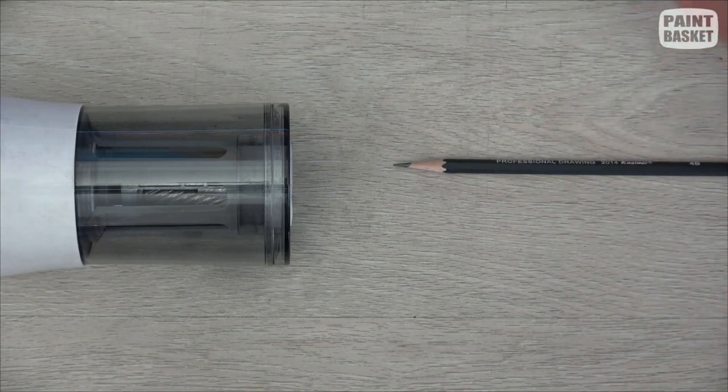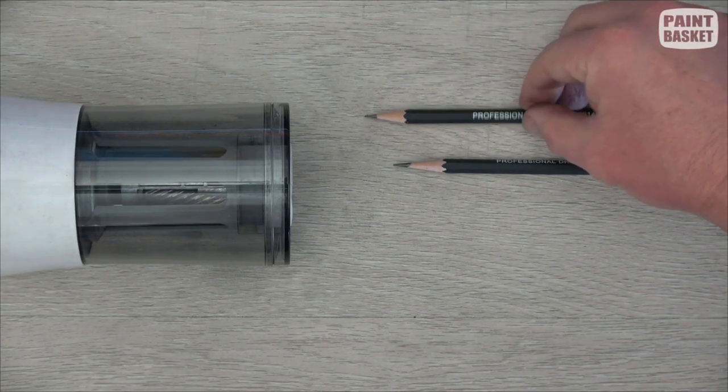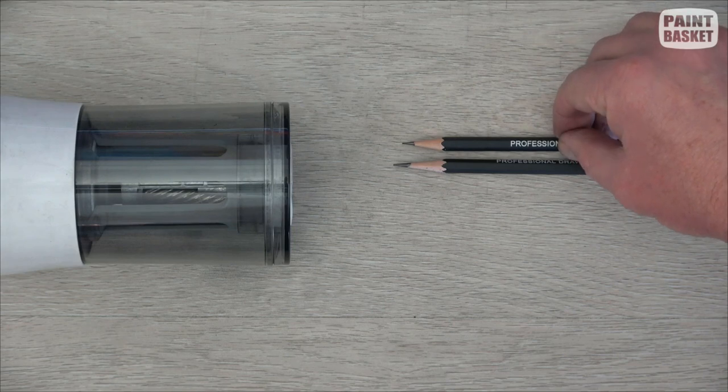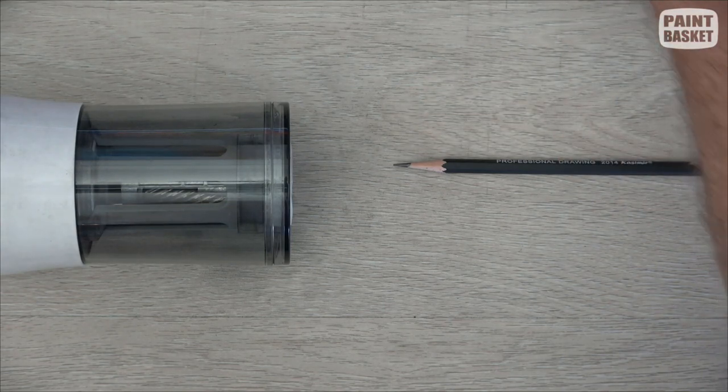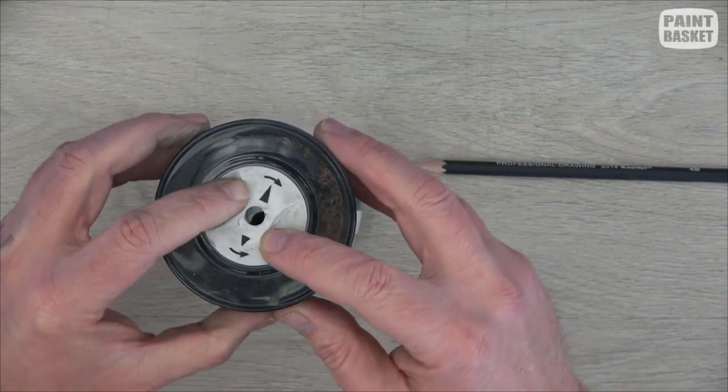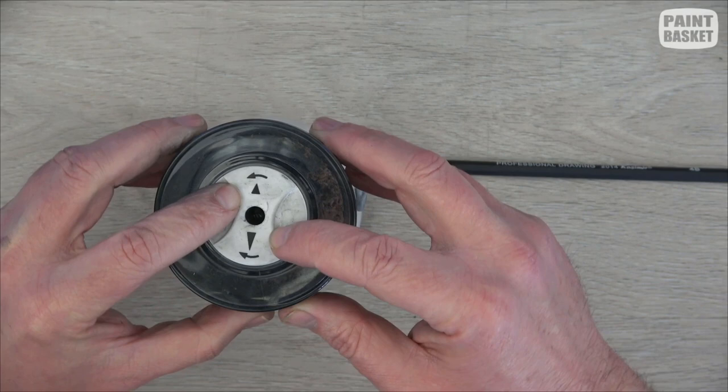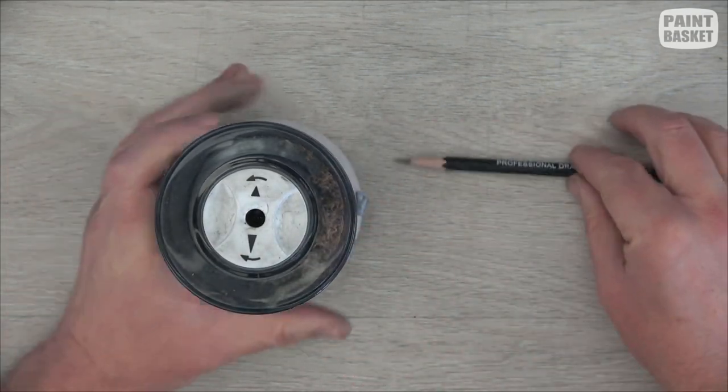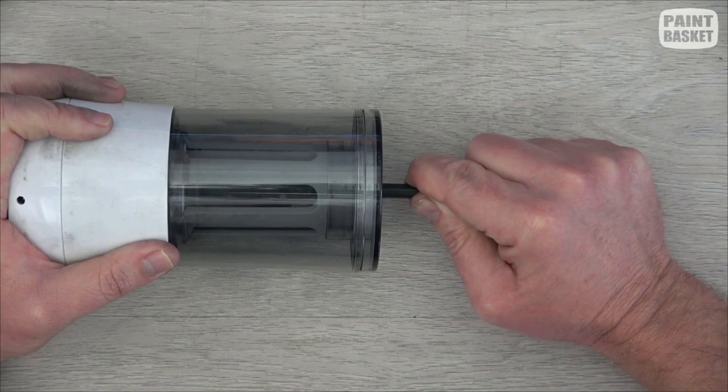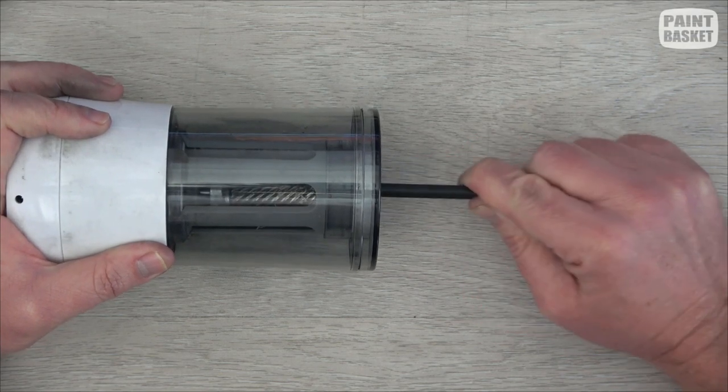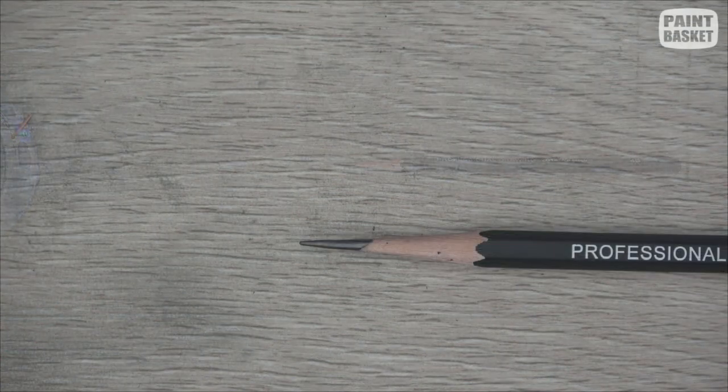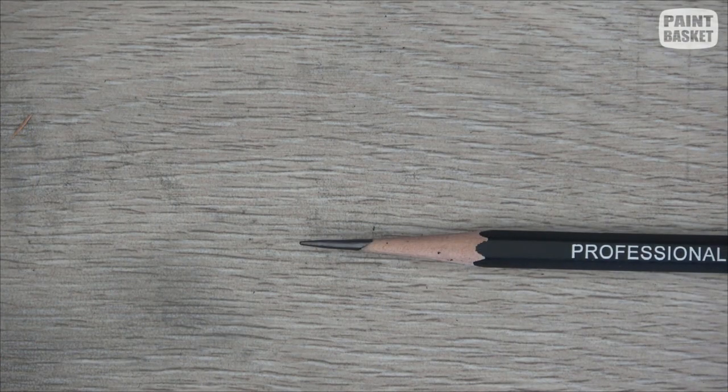That instantly gives you a nice long tip. So let's compare him to that art pencil sharpener. So can you see instantly I've got myself a much longer tip. Okay, so now we can sharpen him further. So we turn him so that it's on the long tip setting. Let's do it again. And just look at that. You have yourself a beautifully long tip.